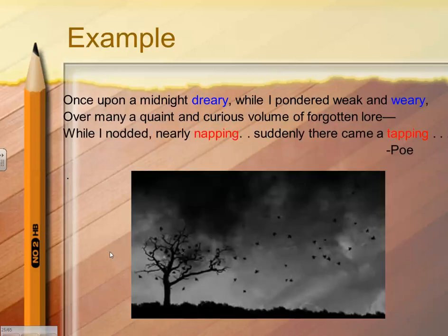Once upon a midnight dreary, while I pondered, weak and weary, over many a quaint and curious volume of forgotten lore. While I nodded nearly napping, suddenly there came a tapping, a rapping at my chamber door. Love, love, love — Poe. And this is obviously from The Raven.